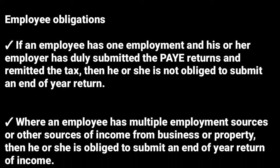Another obligation is that where an employee has multiple employment sources or other sources of income from business or property, then he or she is obliged to submit an end-of-year return of income. If you have more than one source of income, you are supposed to submit the end-of-year return of income, which shows a statement of your income — how you earned in the year. But if you have only one employment, only one job, you're not supposed to do that.